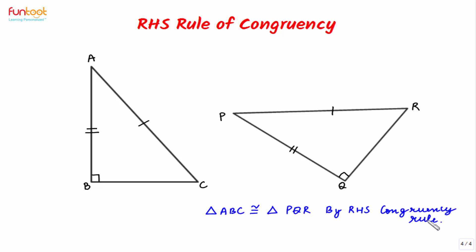Now let's discuss what is the need for RHS rule of congruency. In triangles ABC and PQR, the right angle is not the angle included between the given sides. So we cannot use SAS here. That is why we need RHS rule of congruency for proving these two triangles as congruent.